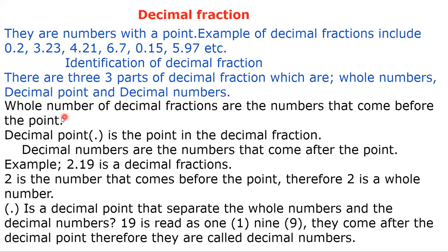When you talk about whole numbers, the whole numbers of decimal fractions are the numbers that come before the point. For example, in 0.2, the number that comes before the point is zero — so zero is the whole number. In 3.23, the number before the point is three, so three is the whole number.